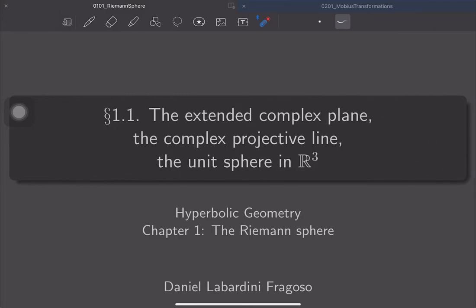The second model was the complex projective line, whose definition is really more algebraic. As I said, its points are precisely the one-dimensional complex vector subspaces of C².